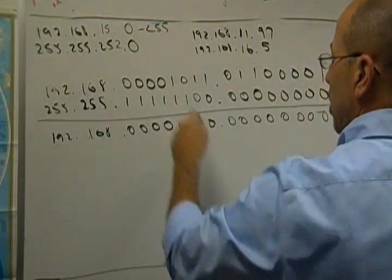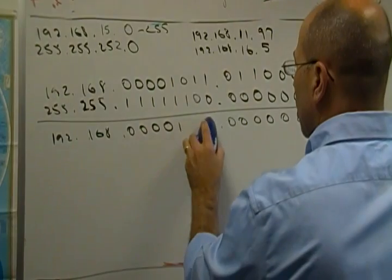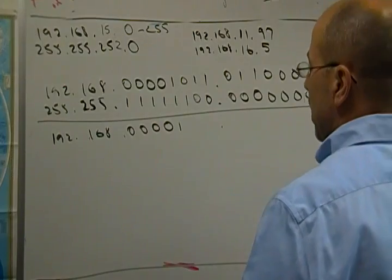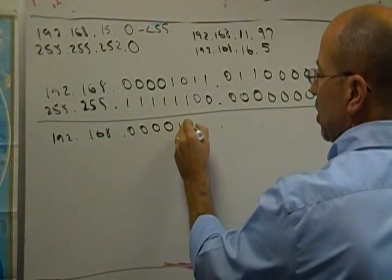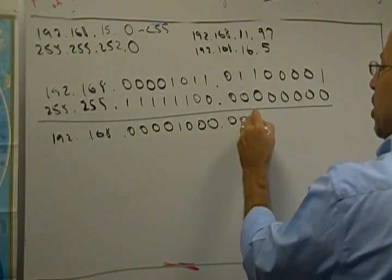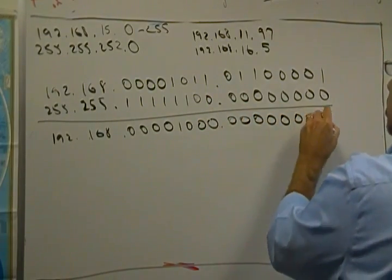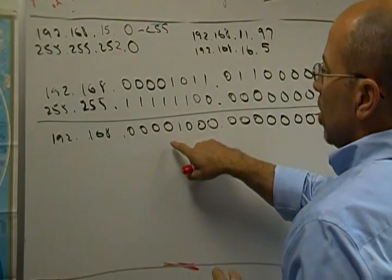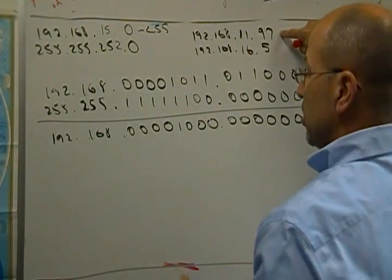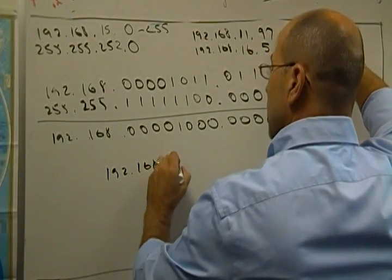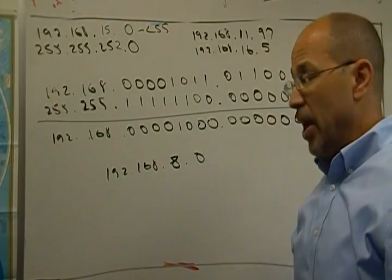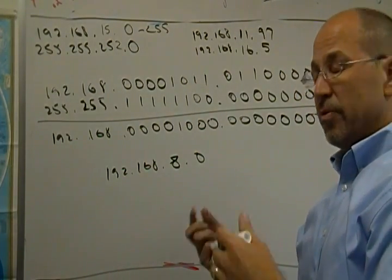Well, my new mask was here. What does that look like? Well, I get a zero here. Uh-oh. And then all zeros here. Okay? So now this range is, so this host, 11.97, is actually on the 192.168.8.0 network. So that actually tracks with our example of being in the range of 12 to 15.